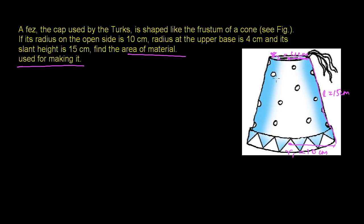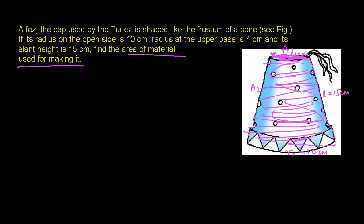To find the area for making this cap, we need the curved surface area, the lateral surface area on the peripheral side, and the upper base. The lower base will be open because we need to insert it on the head. So we need to find the area of the upper circle (a1) and the curved surface area (a2). We'll combine these to get the total area of material used to make this fez cap.